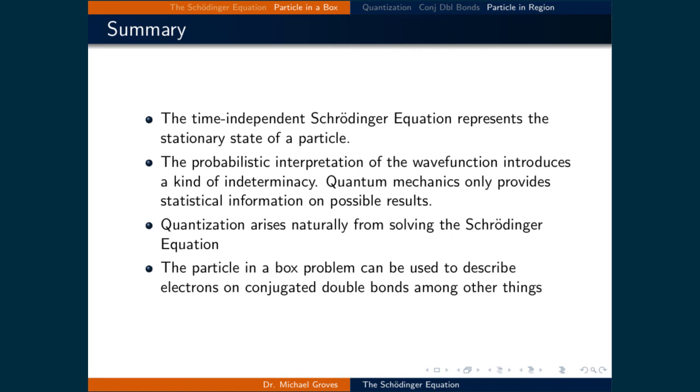The second point is that the probabilistic interpretation of the wave function introduces a kind of indeterminacy. Quantum mechanics only provides statistical information on possible results. This is why quantum mechanics is not intuitive, because we live in a deterministic world. The third point is that quantization arises naturally from solving the Schrödinger equation. There was no need to insert it explicitly. It came about just by solving the wave equation and applying boundary conditions.